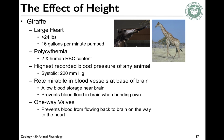As you might imagine, giraffes have a really large heart — about 24 pounds — and about 16 gallons per minute of blood is pumped out of that heart. They also have polycythemia: about twice the human red blood cell content, so they can bind more oxygen. They have the highest recorded blood pressure of any living animal, with a systolic pressure of about 220 millimeters of mercury. To get blood to the brain without damaging it, there's a rete mirabile — a network of capillaries at the base of the brain — that allows for blood storage near the brain and prevents blood flooding the brain when they bend down. It's like a big sponge at the base of the brain.